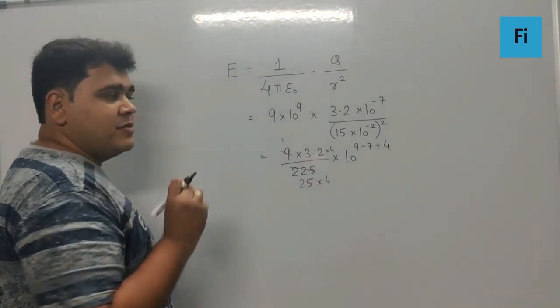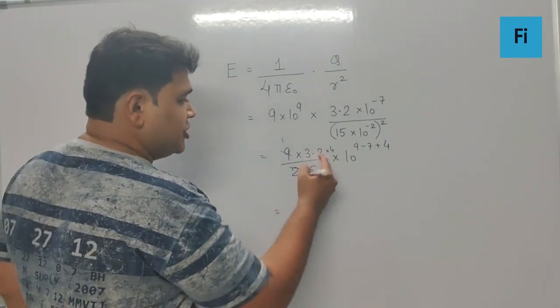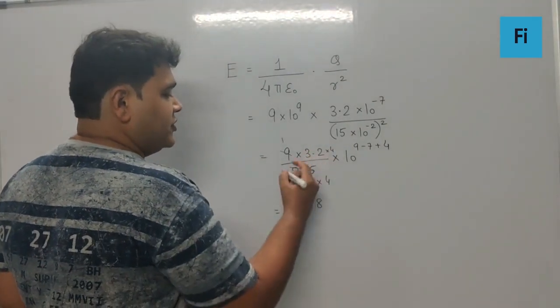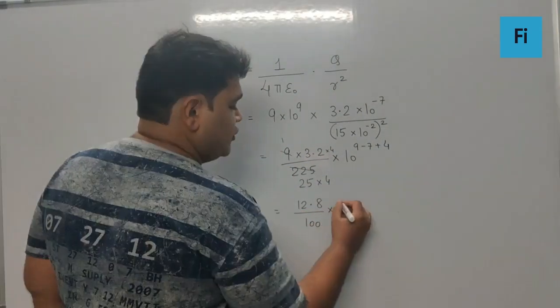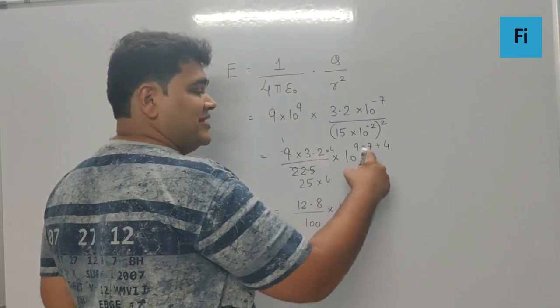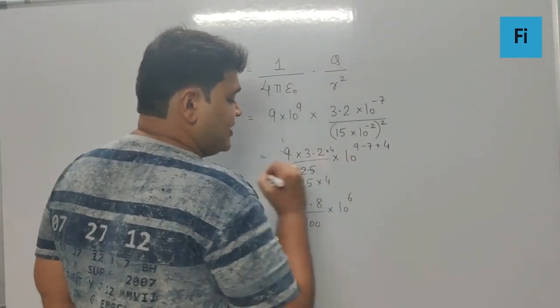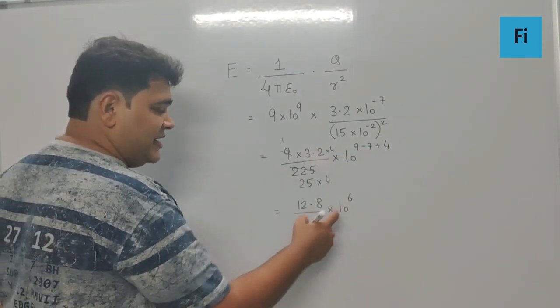So here this becomes 4 times 2 is 8, 4 times 3 is 12, so 12.8 upon 100 into this power of 10 becomes 9 minus 7 is 2, plus 4 is 6. So if we simplify this...